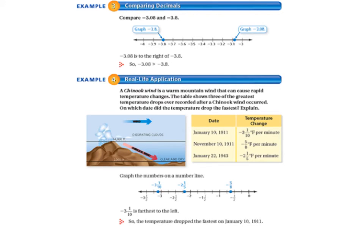Example 3: we're comparing decimals. Compare negative 3 and 8 hundredths to negative 3 and 8 tenths. Negative 3 and 8 hundredths is on the left and negative 3 and 8 tenths is over to the right. Since negative 3 and 8 hundredths is to the right of negative 3 and 8 tenths, then negative 3 and 8 hundredths is greater than negative 3 and 8 tenths. Always remember that the number to the right is greater than the number to the left.